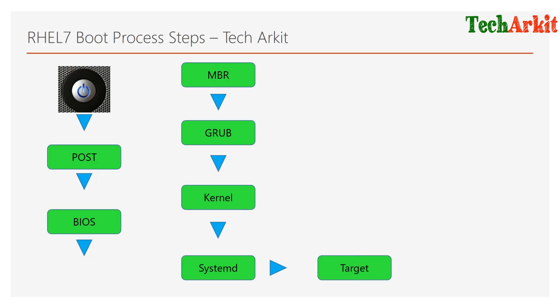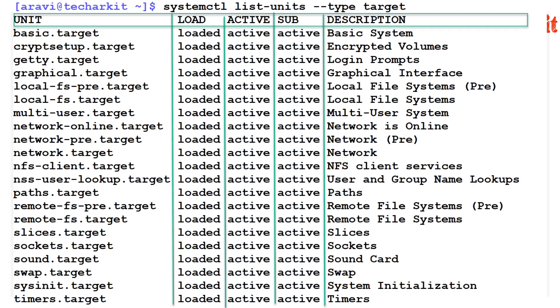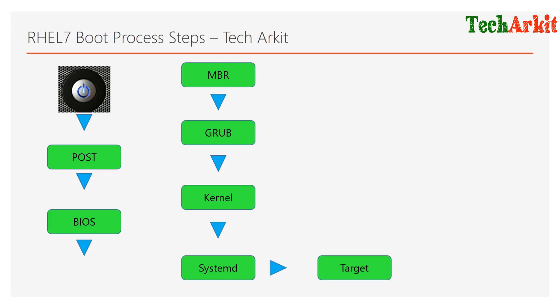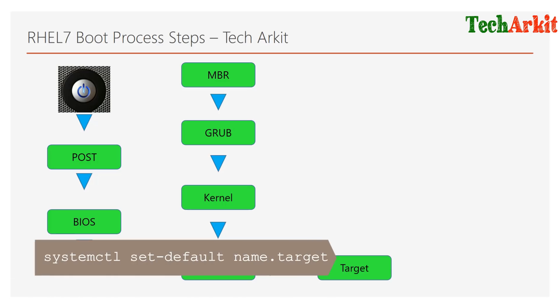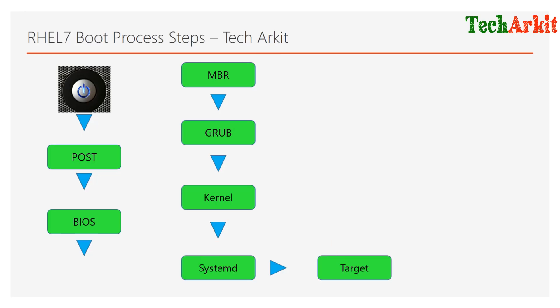The systemd process is started with Process ID 1. After that, the next processes begin. systemd boots into the default target that you have set — for example, the multi-user target, the graphical UI target, or the CLI target. Whatever default target is assigned, it will be loaded along with all the services that are enabled to start at startup.